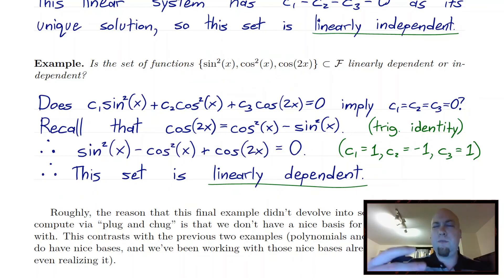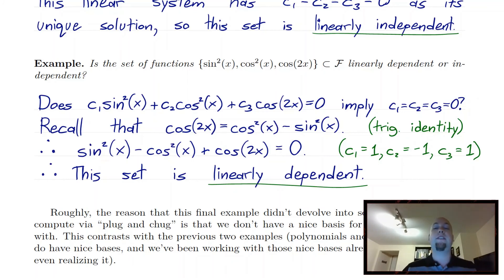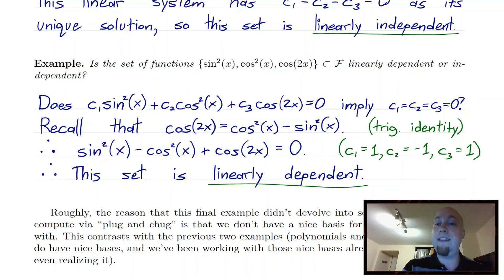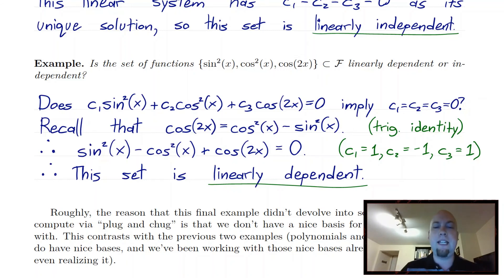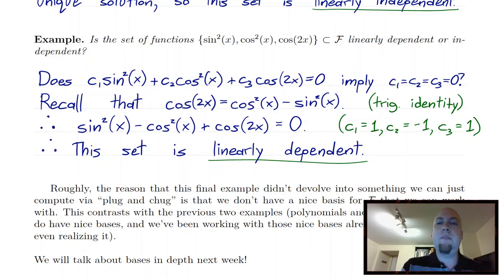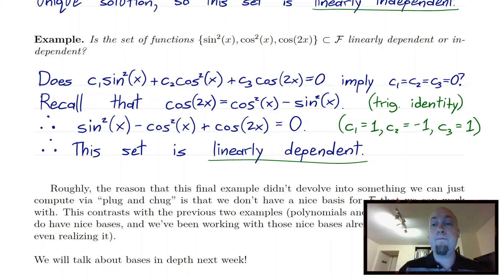In other words, there are redundancies in this set. One of these functions can be built out of the other ones using just our vector space operations — scalar multiplication and vector addition. In particular, via the trig identity: you take cos²x and subtract sin²x and you get cos 2x. So there's nothing new when you introduce that third function; that's why it's linearly dependent. Next week we're going to combine these ideas and start talking about bases of arbitrary vector spaces, and we'll see what made this final example different in flavor. This vector space F doesn't have a nice basis to work with, so it's a little trickier to turn the linear independence equation into a system of linear equations — it's more exotic than polynomials, matrices, and R^n.